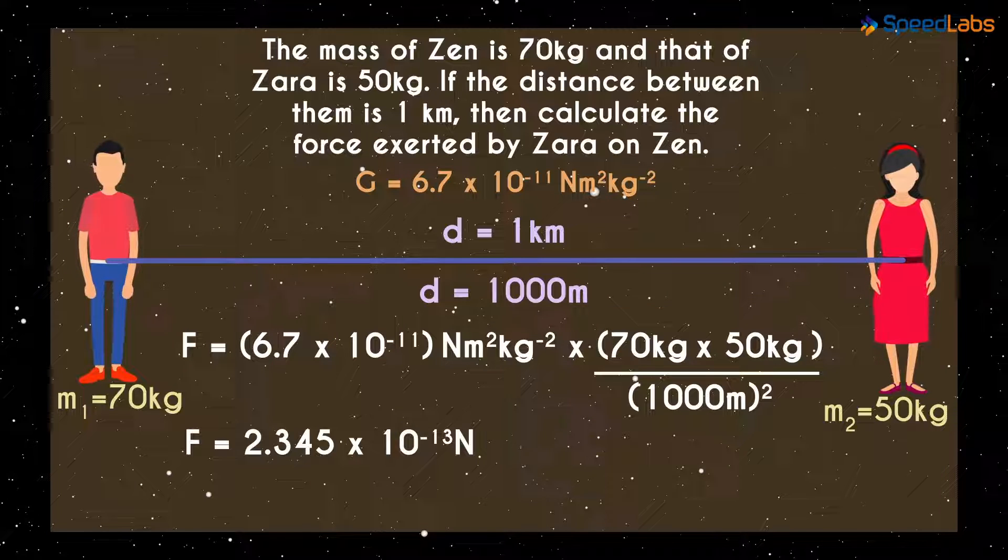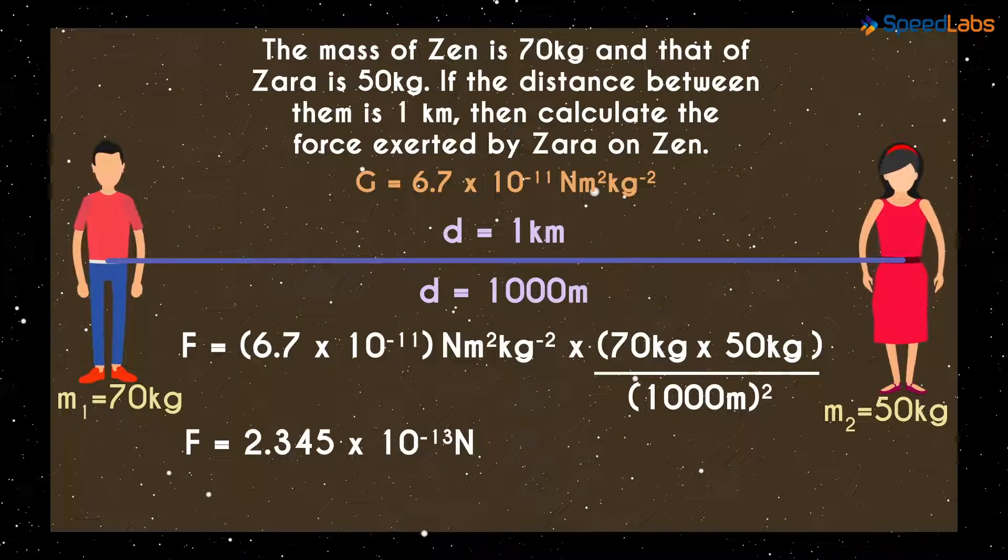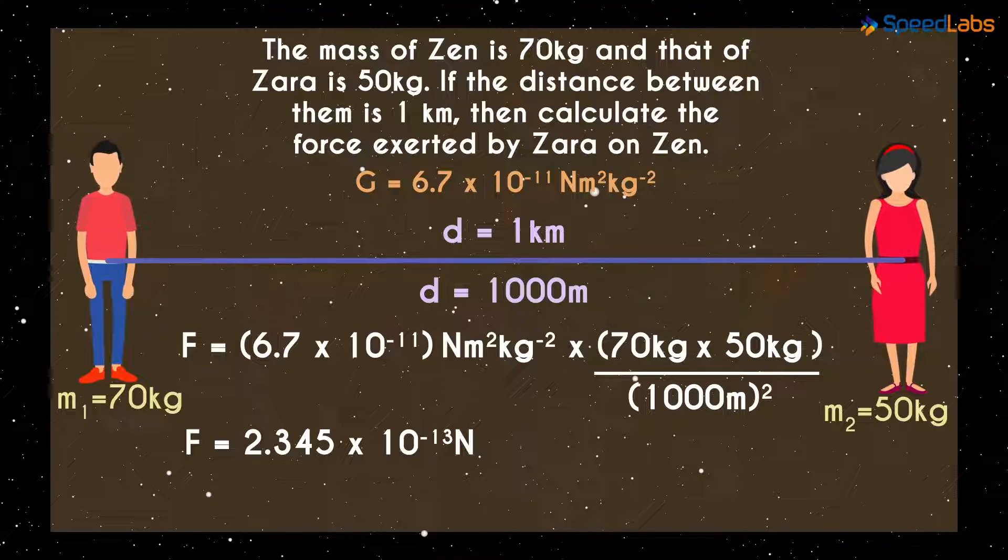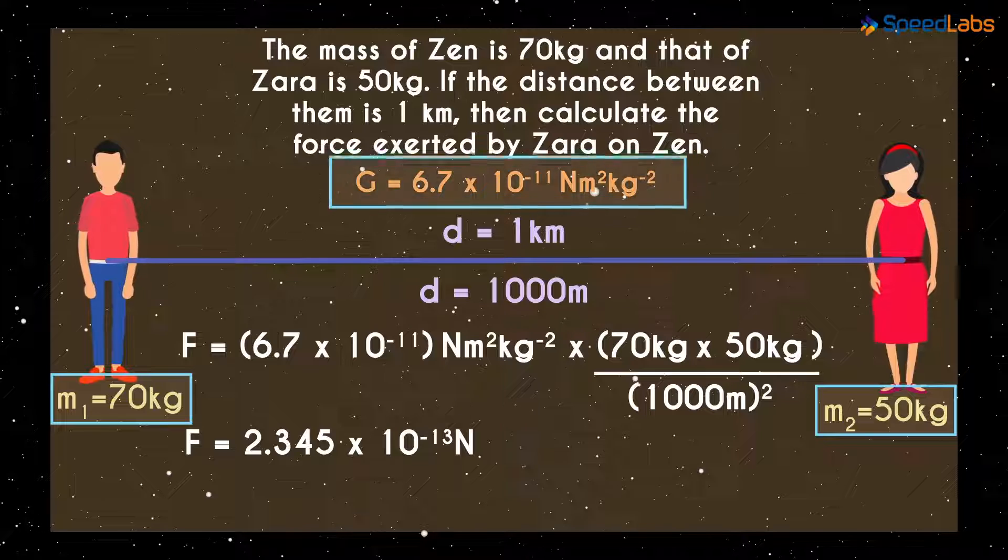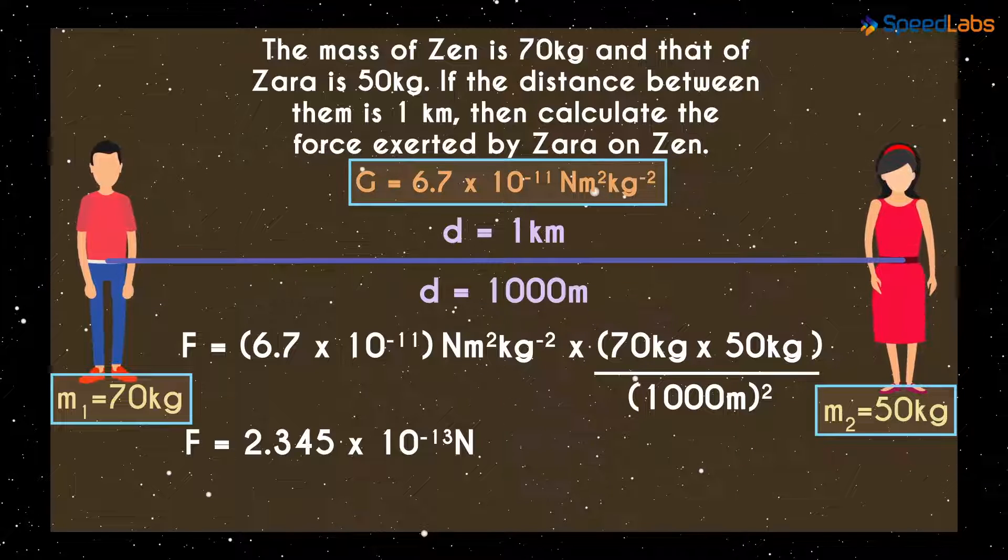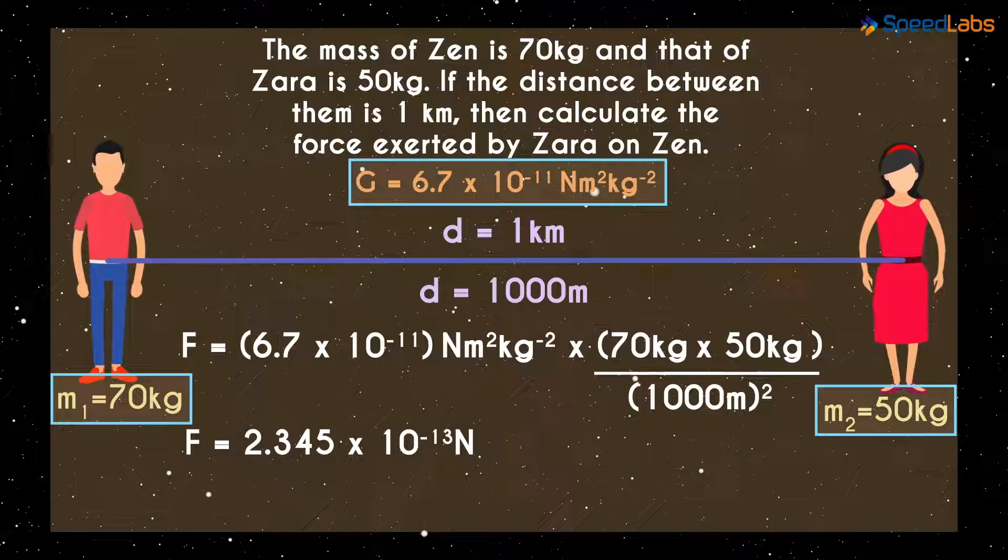Do you see how tiny this force is? Now you probably know why humans don't get pulled towards each other. As the masses are less and the value of G is very small, the overall force also will be minuscule.